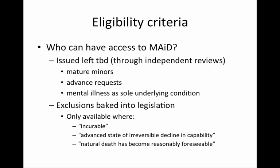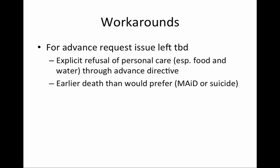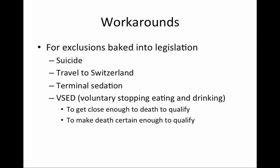The second major outstanding legal issue concerns the eligibility criteria. The government chose to exclude mature minors, requests made in advance of loss of capacity, and individuals whose sole condition is a mental illness. They also baked some exclusions into the legislation by saying that medical assistance in dying is only available to those whose conditions are incurable, who are in an advanced state of irreversible decline in capability, and whose natural death has become reasonably foreseeable. There will be workarounds for the advance requests issue—specifically, we will see those where provincial territorial legislation allows refuse food and water through advance directives, and others will seek medical assistance in dying or commit suicide without assistance earlier than they would otherwise desire to die, but before they lose capacity.